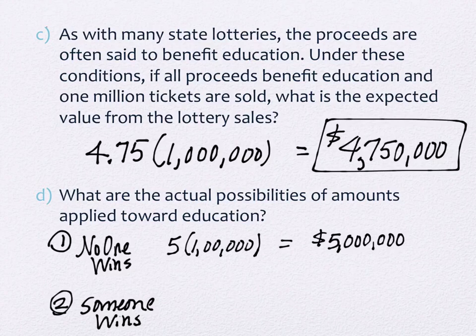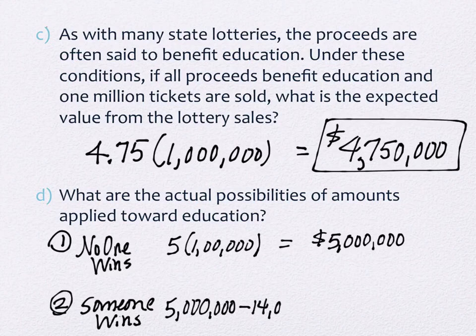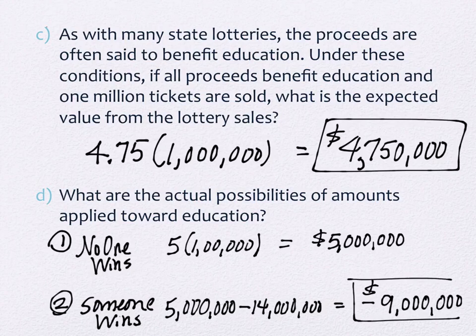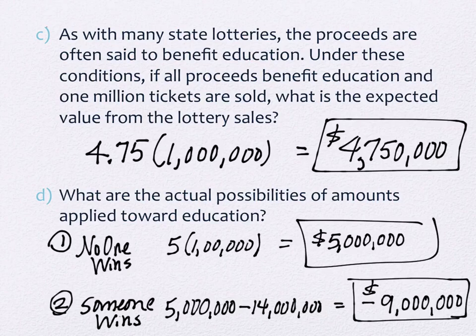But that's not the actual value. That's the average over time kind of value. The real reality is that one of two things happens. Either no one wins or someone wins. So if no one wins the reality is that each of the tickets was really five dollars. So one option is that it's five million dollars that the state gets. But if someone wins we still collected the same five million dollars but then we have to subtract 14 million. We're at negative nine, negative nine million.